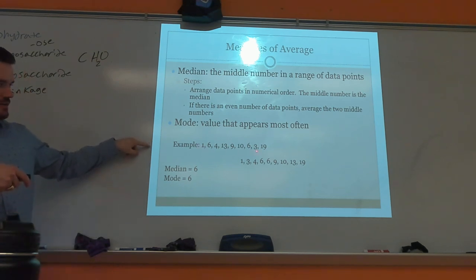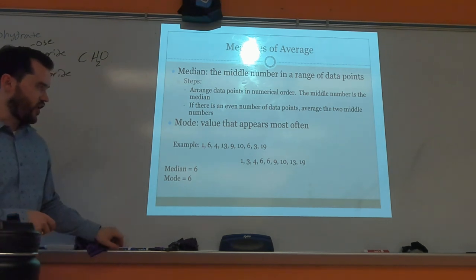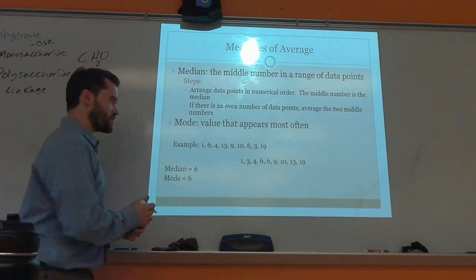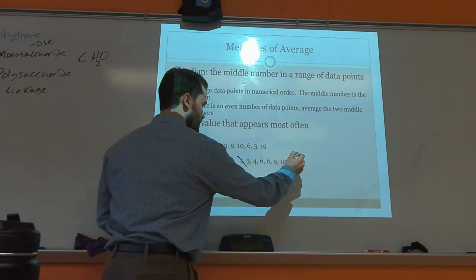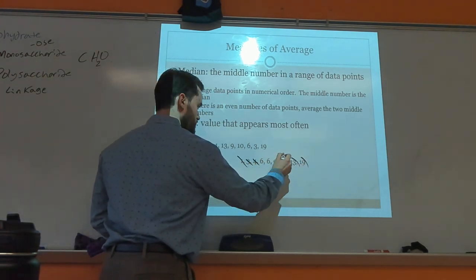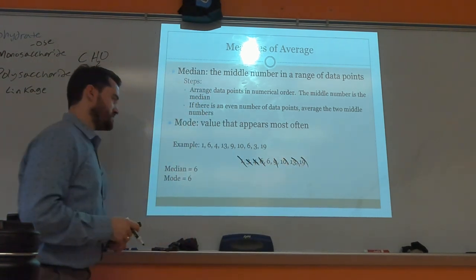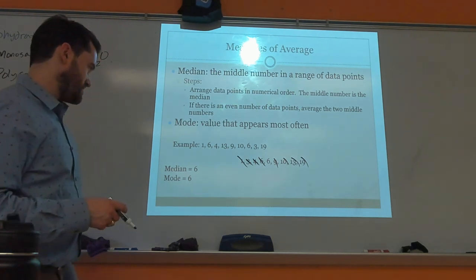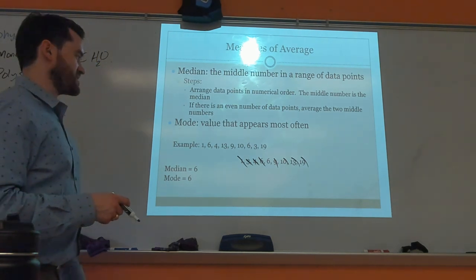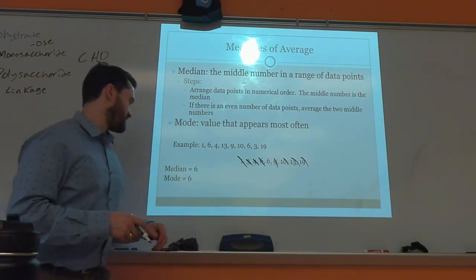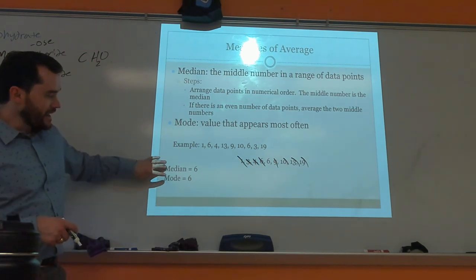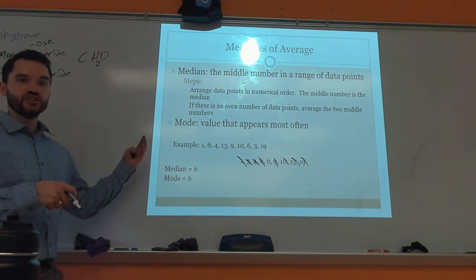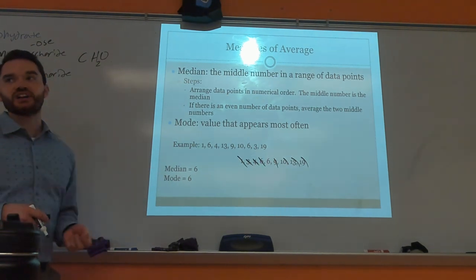For the median, you line up the numbers and cross off until you get to the middle, which here is six. The median and mode happen to be the same in this example because there are two sixes, making six the most common number.